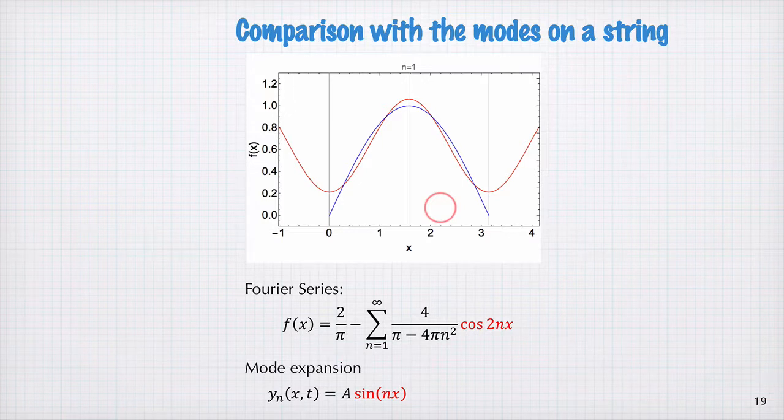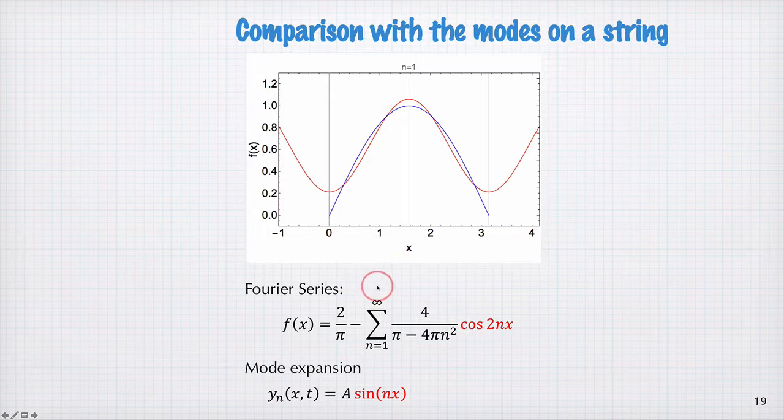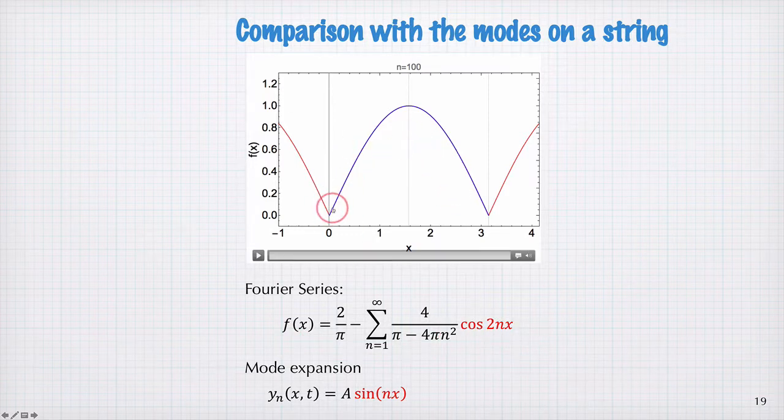I also have a question that you can think about to do with this Fourier series that we looked at, where we expand in the mode basis. Previously, we did a Fourier expansion of half a sine wave, and we came up with a Fourier series that looks like this. It's a sum of cosine waves with some amplitudes and an offset here. So this is the Fourier series that we derived for this half sine wave.